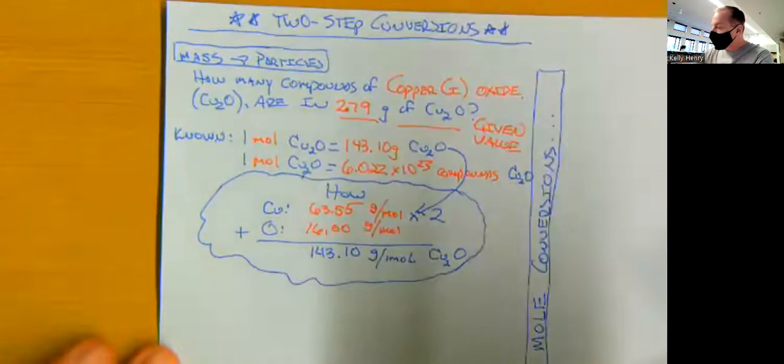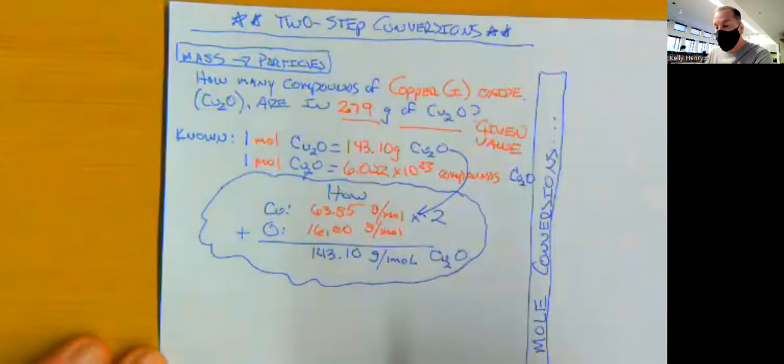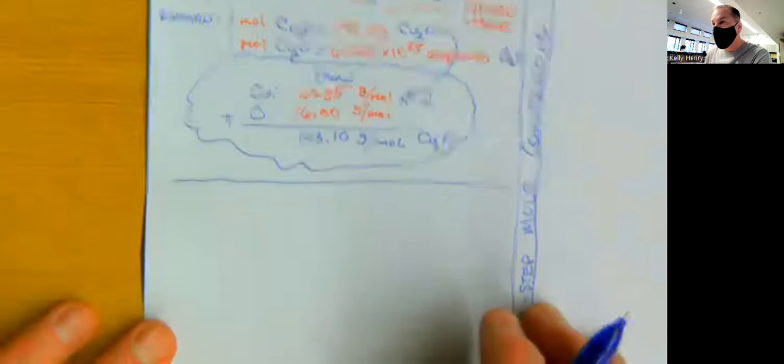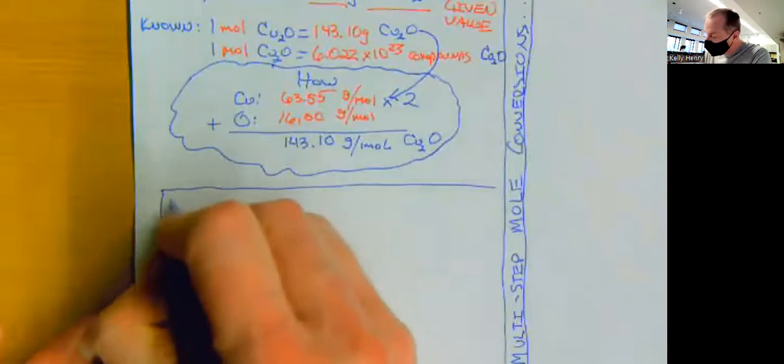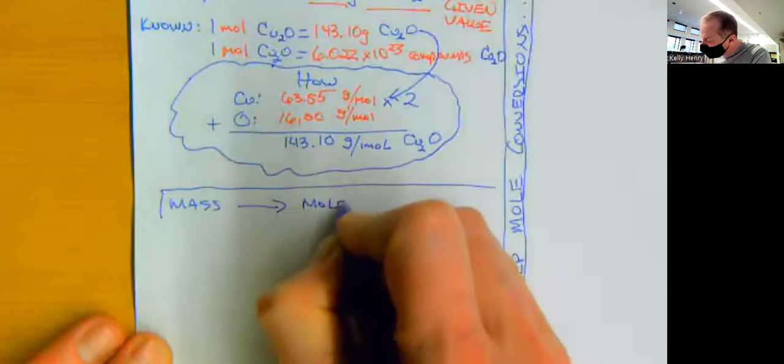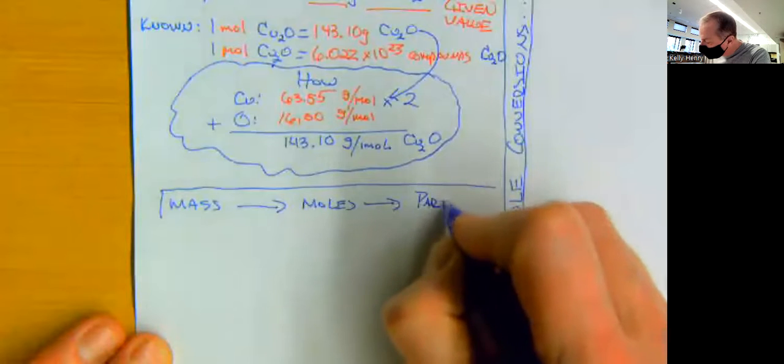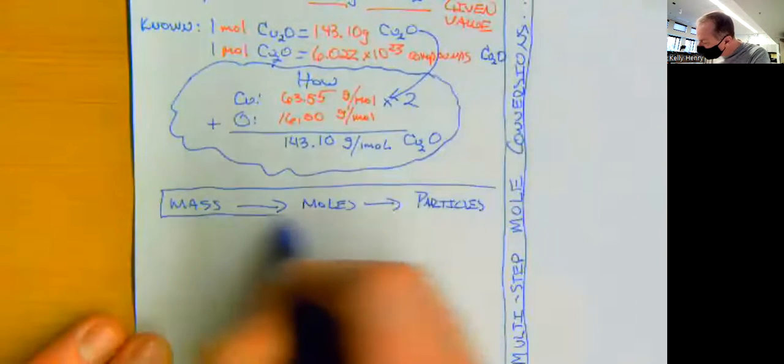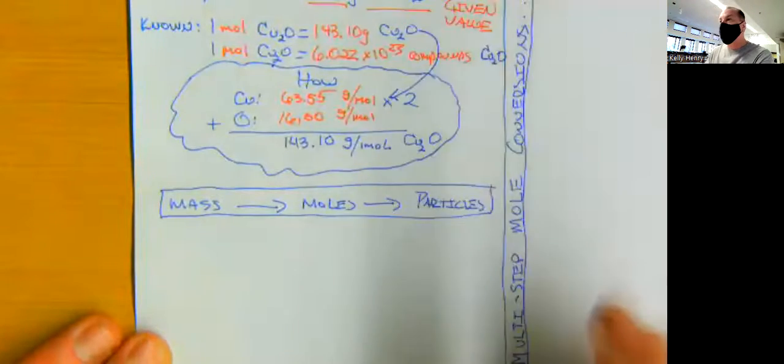So let's jump now down to using this information in a calculation. Specifically, we are going to go from mass to moles to particles. So what is our given in this case?